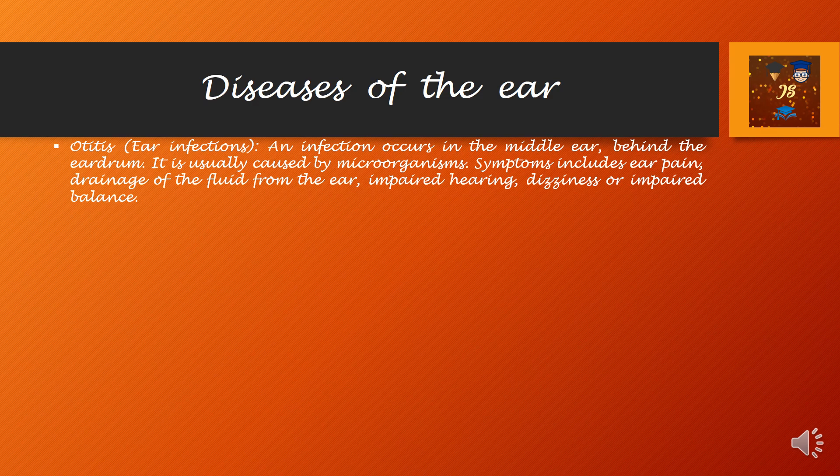Now we will discuss some diseases of the ear. First is otitis — an ear infection that occurs in the middle ear. The main cause is infection by microorganisms like bacteria and viruses. It very often occurs in the case of swimmers when water is present inside the ear and infection develops. The symptoms include impaired hearing — that means difficulty hearing — and drainage of foul-smelling fluid from the ear. Next is perforated eardrum: if there is a hole in the tissue that separates the ear canal from the middle ear, that is called a perforated eardrum. It may be caused by loud sounds, head trauma, etc.